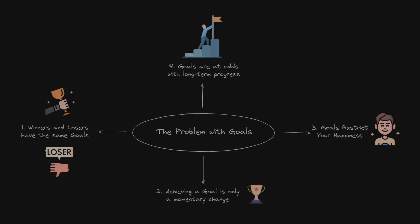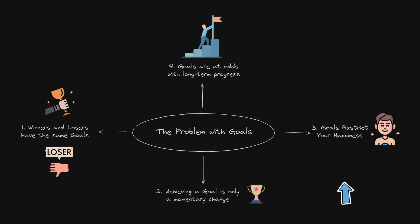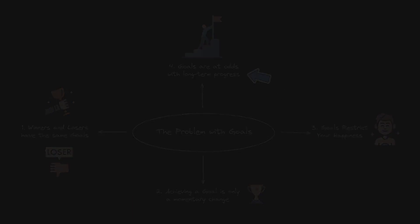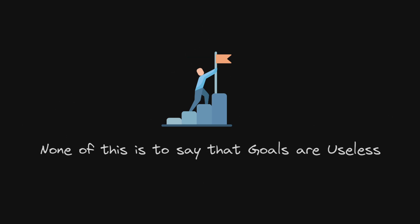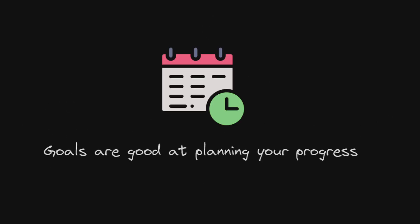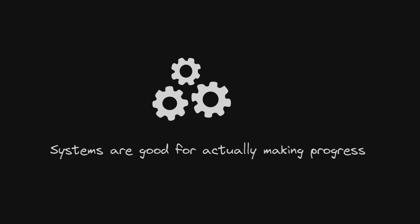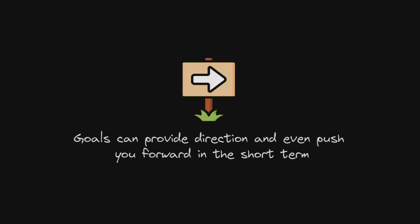Fall in love with systems, not goals. There are four problems with goals. Winners and losers have the same goals. Achieving a goal is only a momentary change. Goals restrict your happiness. Goals are at odds with long-term progress. None of this is to say that goals are useless. Goals are good at planning your progress and systems are good for actually making progress. Goals can provide direction and even push you forward in the short-term.